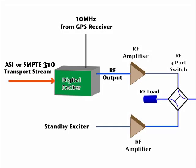The digital exciter creates the RF signal that is to be broadcast. It takes the transport stream and converts it into the required ATSC RF signal called 8VSB. To do this, at least two signals are required: the first is a transport stream containing all the programs to be broadcast, and second, a 10 MHz reference that is locked to the GPS signal.